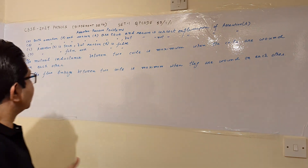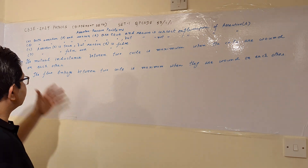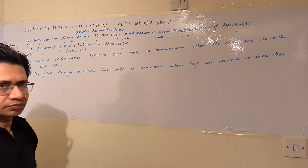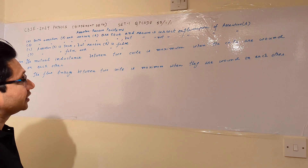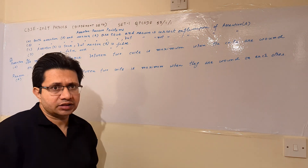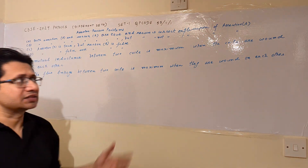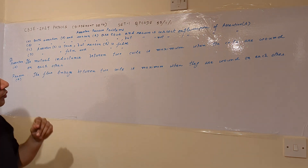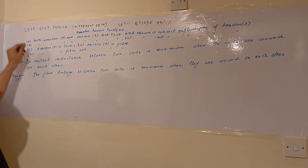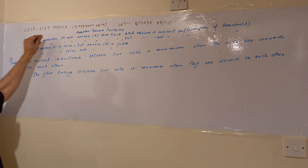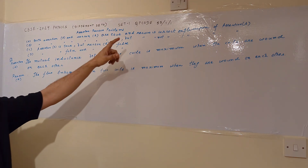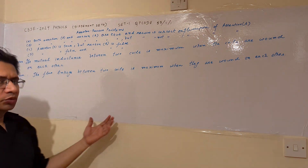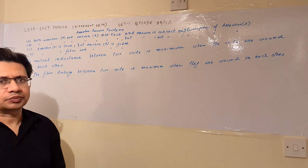When coils are wound on each other, the mutual inductance becomes the largest — it is maximum. Both the assertion and reason are correct, and the reason is the correct explanation of the assertion. So option A is correct: both assertion and reason are true and reason is the correct explanation of assertion. Hope you understand the solution, thank you.